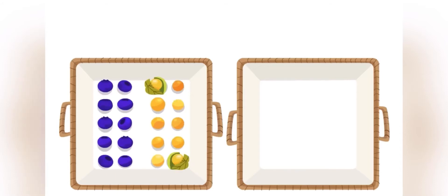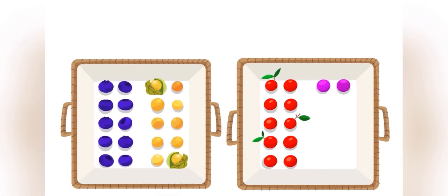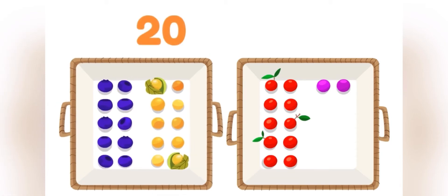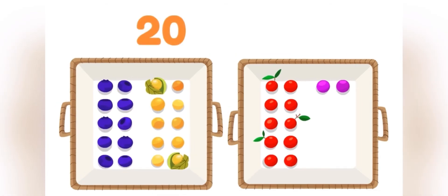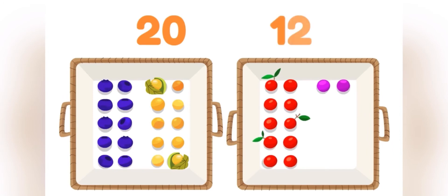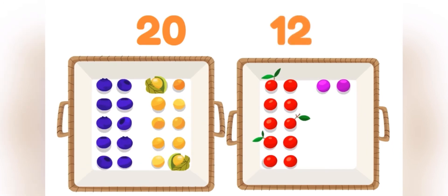I went berry picking and found lots of berries. This basket has two groups of ten. This basket has one group of ten and two singles. So this one has more.